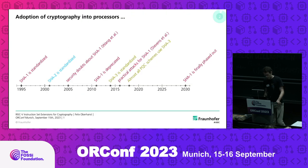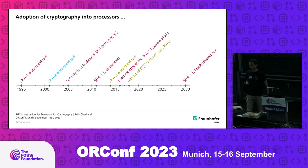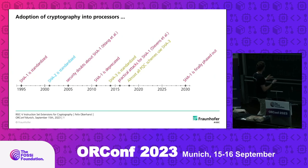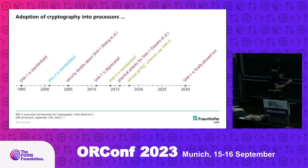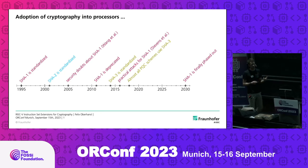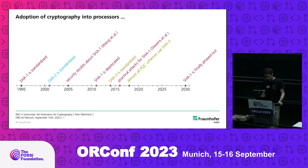I want to start with a quick timeline. We see the adoption and standardization of secure hashing algorithms — a very important building block needed for a lot of cryptographic algorithms. Way back in 1995, the first iteration of a secure hashing algorithm was standardized. Then, a couple of years later, we had the second one, because by 2005 we already had security doubts about the first one. That's also why it was deprecated in 2011. And the newest iteration, SHA-3, arrived in 2014.